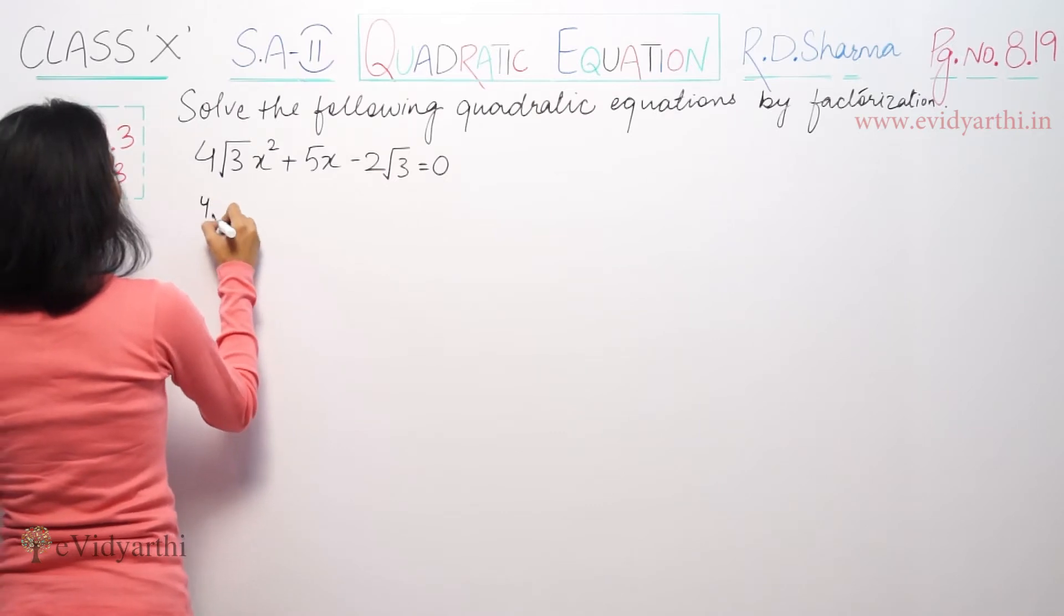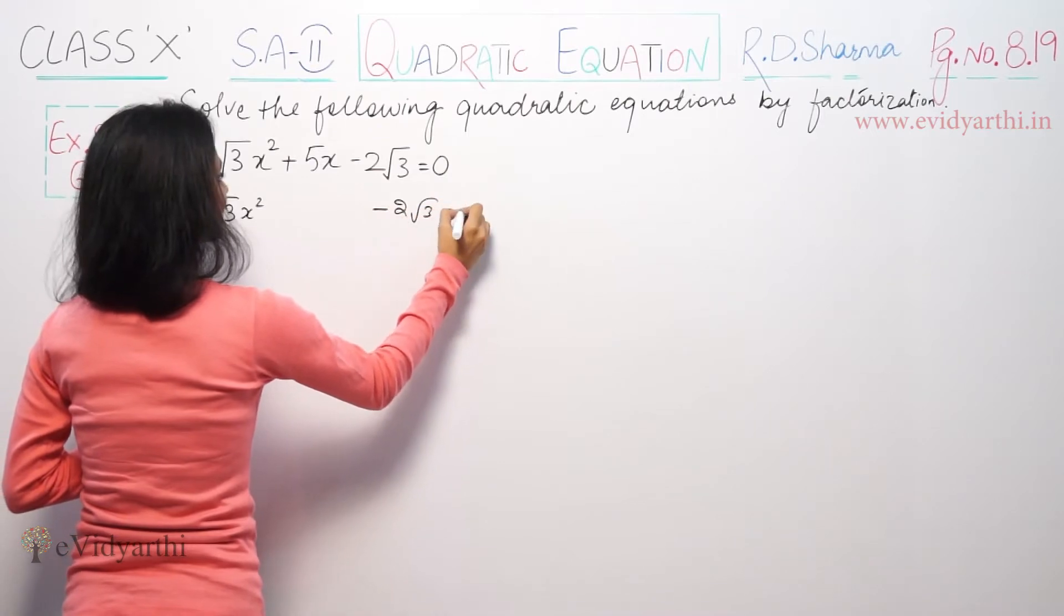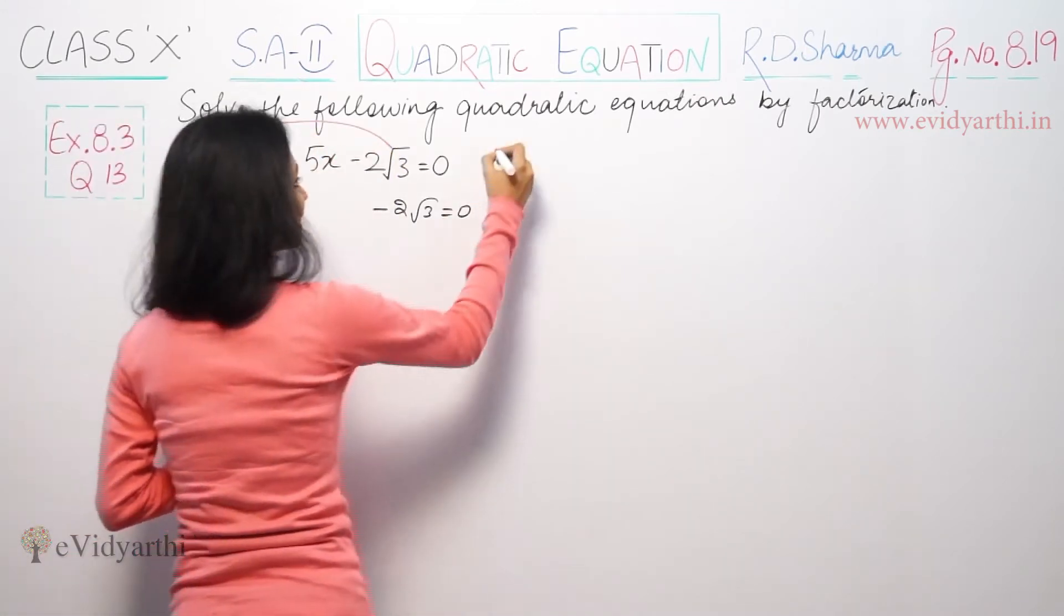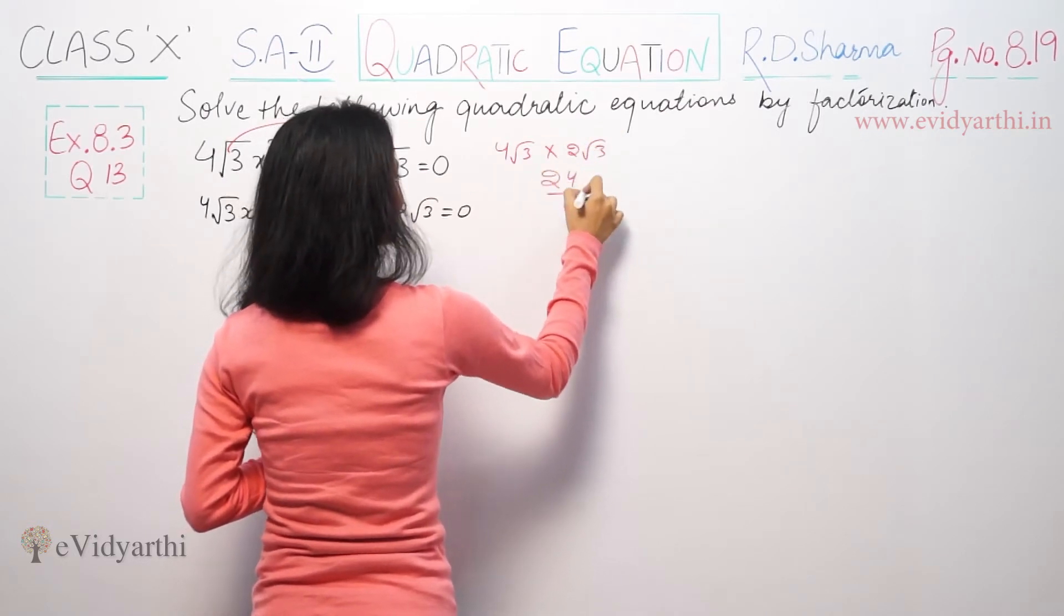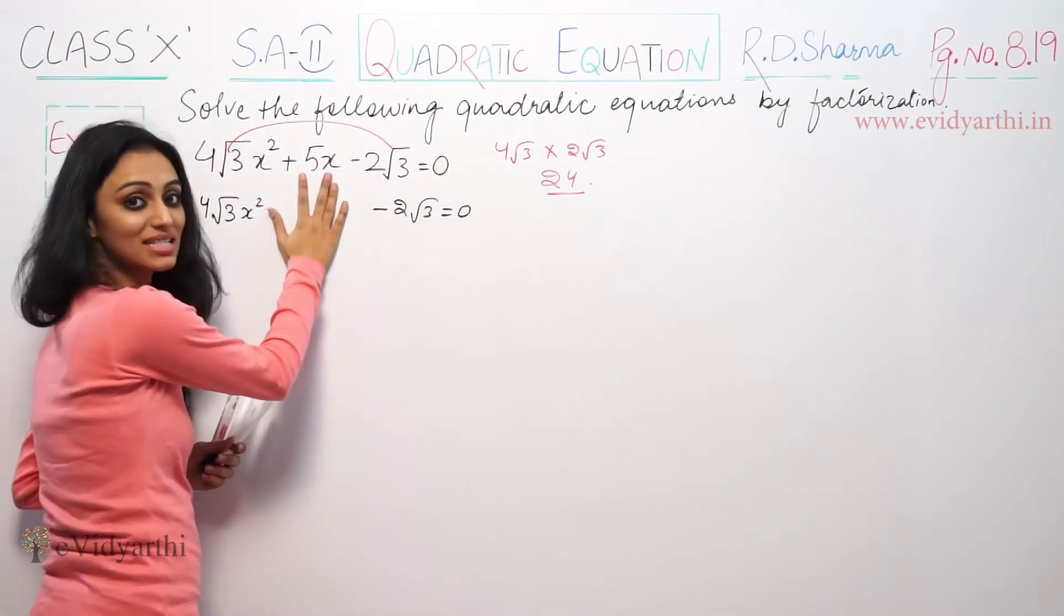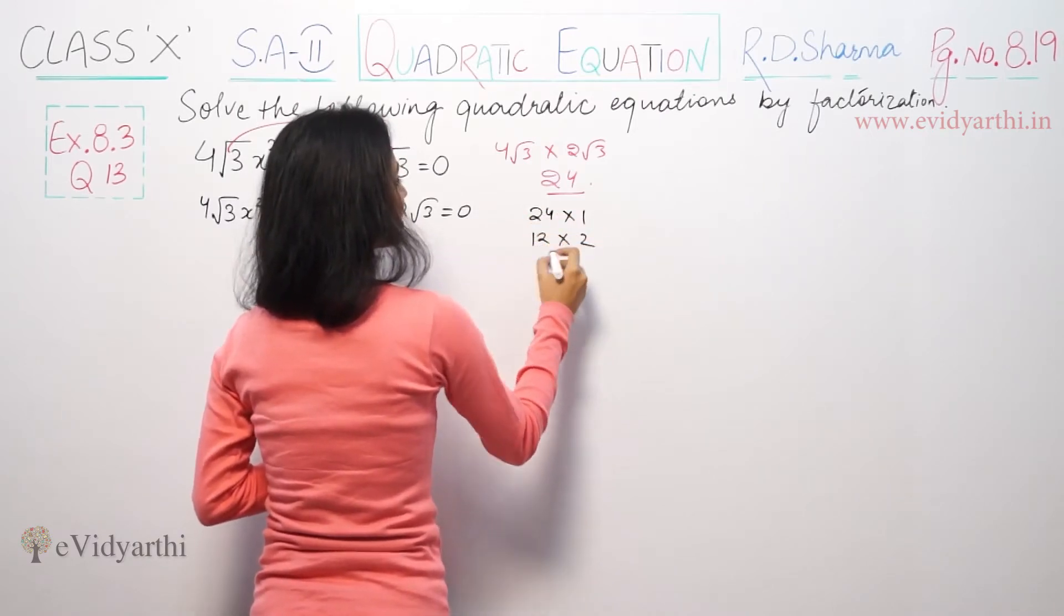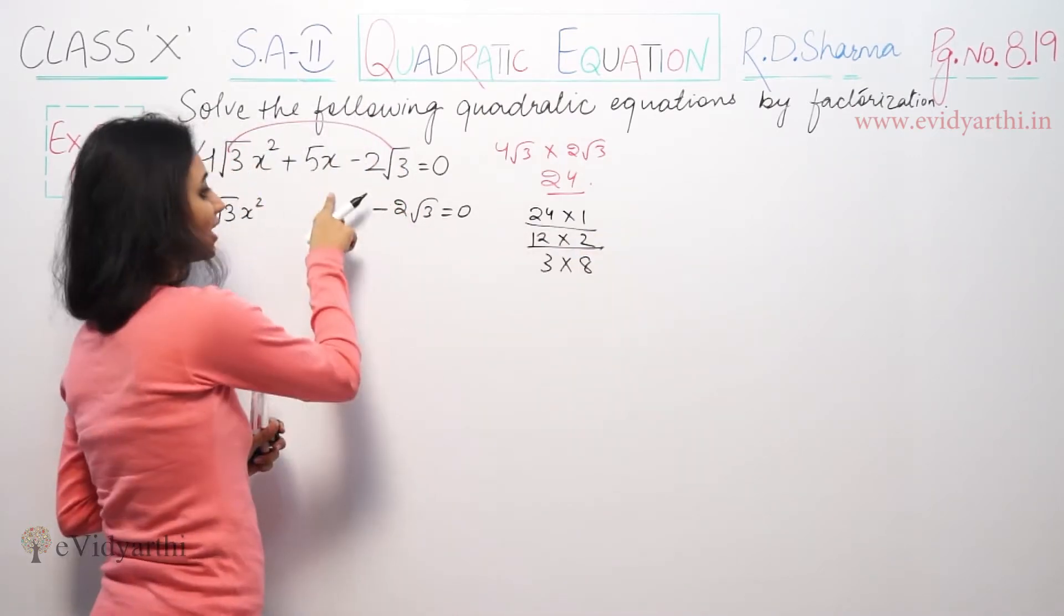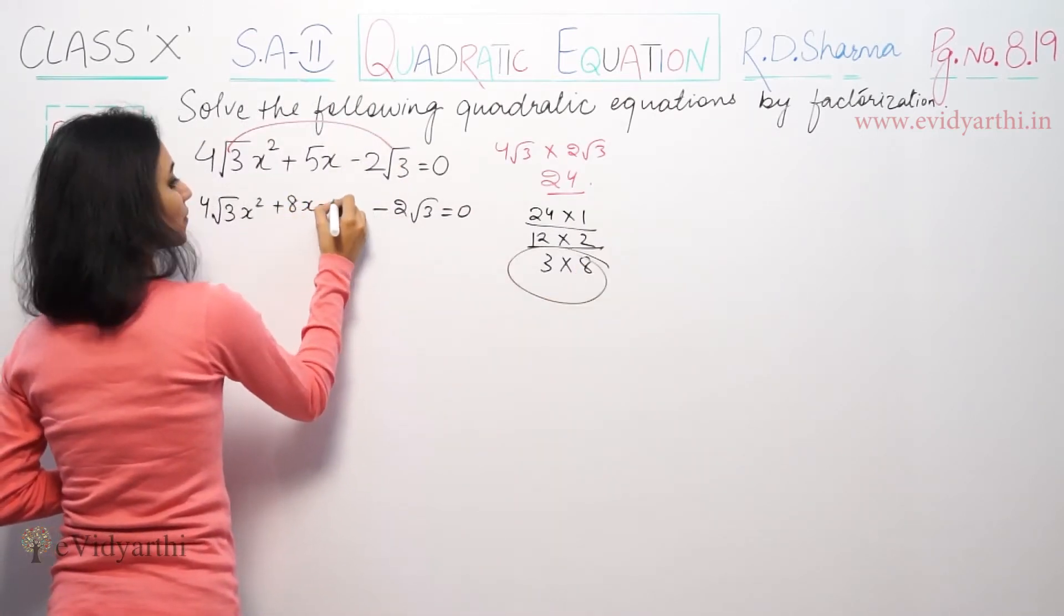So 4√3x² + 5x - 2√3. First of all, we have to multiply 4√3 into 2√3. So 4 times 2 is 8, 8 times 3 is 24. Now 24 to split, plus or minus 5 is equal to 5. So what are the factors? 24: 1, 12, 2, 3, 8. So neither this nor this, plus or minus 5. So 3 into 8, this is equal to 8x minus 3x.